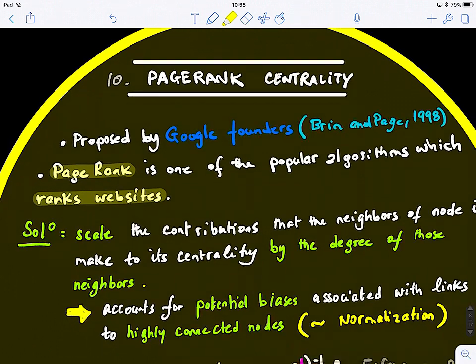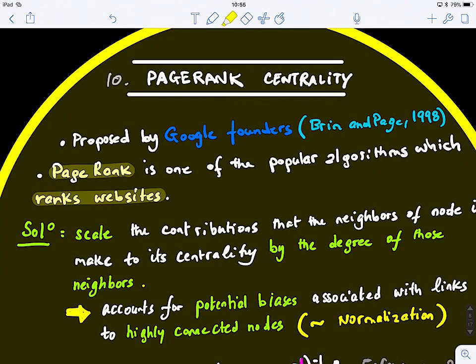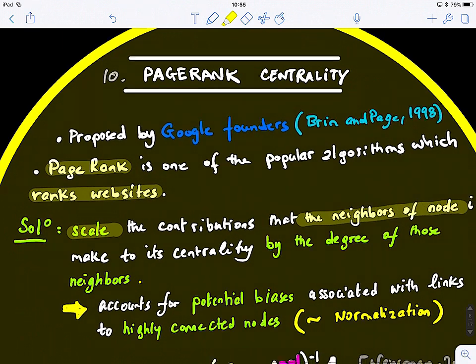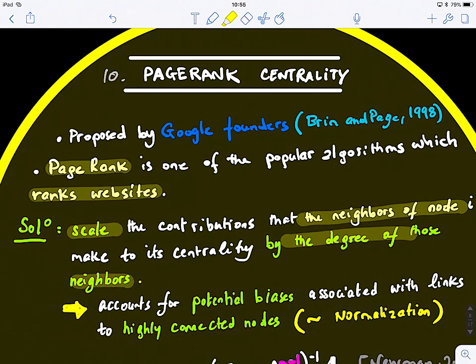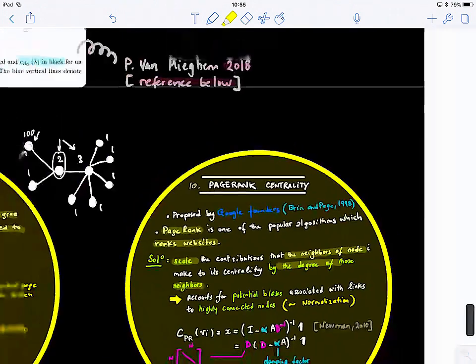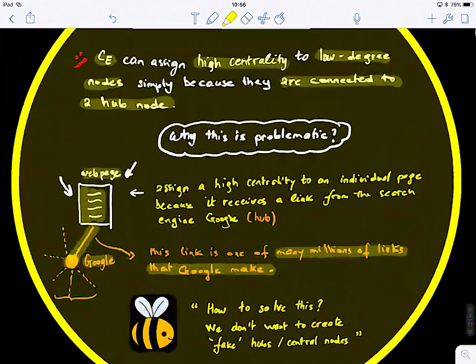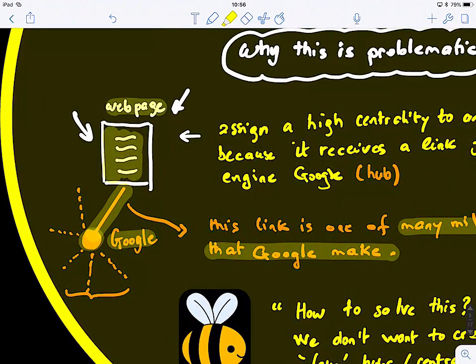The key idea is quite simple, intuitive as usual. So, here, what they've done is to scale the contribution of the neighbors of node I by the degree of those neighbors. So, what they're going to do is here, you can just normalize this by the degree of the node. Even if it's connected to a hub node, you can use some scaling, right?